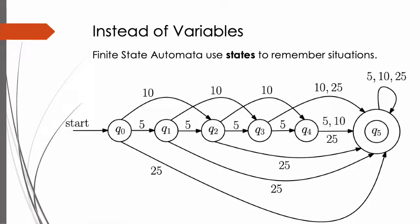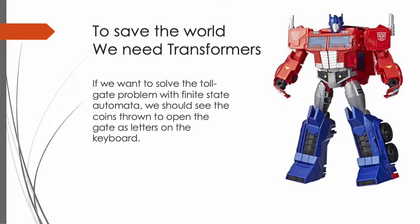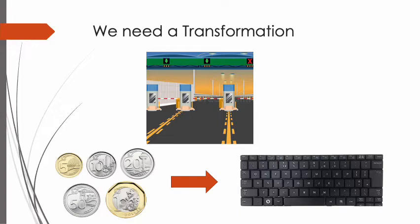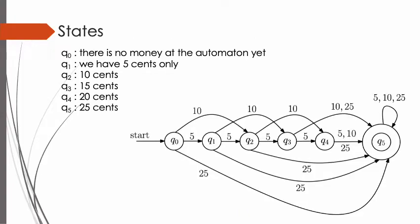Finite state automata use states to remember situations instead of variables. Here we have 6 circles and each circle represents a state. If we want to solve the tollgate problem with finite state automata, we should see the coins thrown to open the gate as letters on the keyboard. In the tollgate problem, Q0 is the initial state — we use it to remember that there is no money at the automaton yet. Q1 shows we have 5 cents only. Likewise, Q2 is 10 cents. Thus you can interpret Q3 and Q4 similarly. Finally, Q5 represents 25 cents, which is our target.